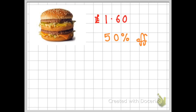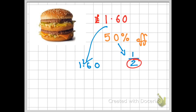Now if you ever see 50% off, you should know that 50% is the same as a half. If I take the original price of £1.60, the denominator tells me I can just divide this number by 2, and that will give me the new price.